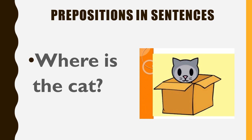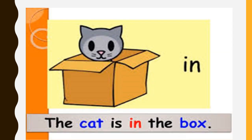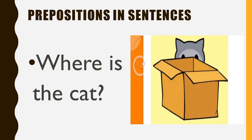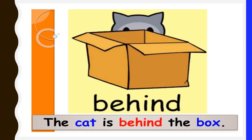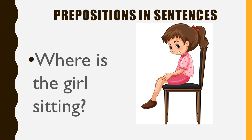First sentence: where is the cat? Just look at the picture and tell me. Yes, the cat is in the box. Now look at the next picture — the cat is behind the box.